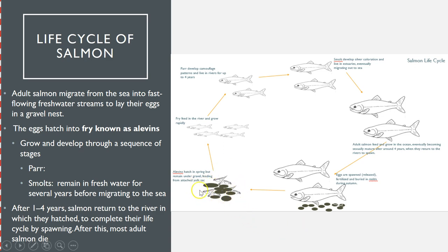From that, the alevins are the first larval stage of these organisms. They are characterized by the fact that they pretty much don't swim — they remain in that gravel area underneath the gravel and don't eat anything. They have a little yolk sac underneath them and feed off of that for a while after they hatch.